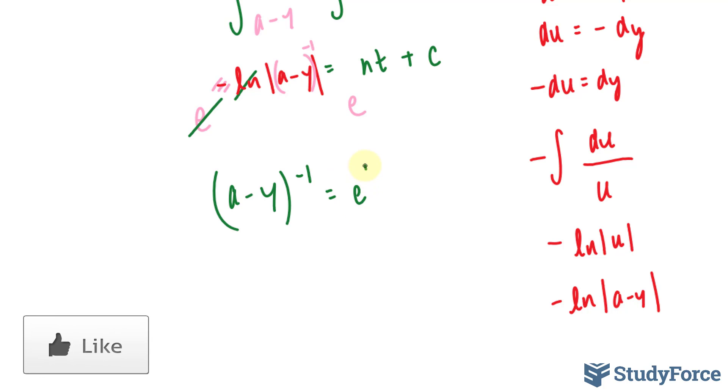And on the right side, we have e to the power of nt, e to the power of c. This becomes 1 over a minus y, e to the power of nt, e to the power of c.